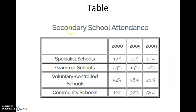The table shows school attendance through the years 2000, 2005, and 2009 — a duration of about nine years. The four types of secondary schools shown are specialist schools, grammar schools, voluntary controlled schools, and community schools. In the year 2000, specialist schools had 12% attendance, grammar schools 24%, voluntary controlled schools 52%, and community schools 12%. Over the years, we see a drastic change.